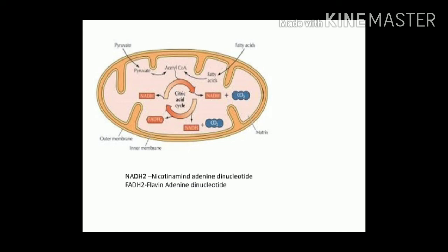The electron transfer chain reaction takes place only in the mitochondria. Molecules of NADH2 and FADH2 formed during all the above processes participate in this electron transfer chain reaction. From each NADH2 molecule, three molecules of ATP are produced, and from each FADH2 molecule, two molecules of ATP are produced during these cyclic reactions.